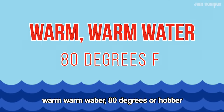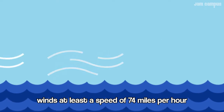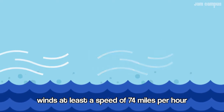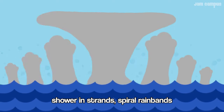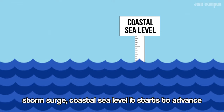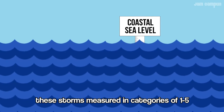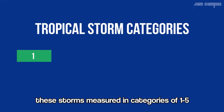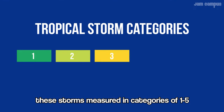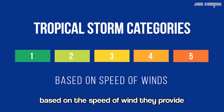Warm, warm water — 80 degrees ahead. Winds at least the speed of 74 miles per hour. Rain bands, storm surge, coastal sea level — it starts to advance. These storms are measured in categories of one through five.